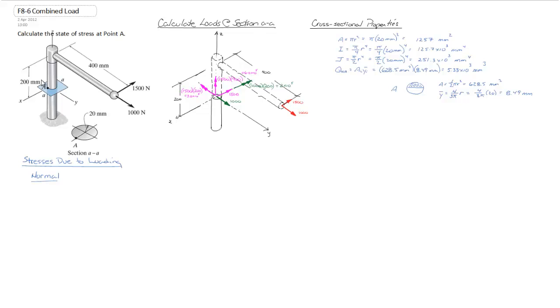So now that we've got the problem all laid out, the cross-sectional properties done, and all the various components of load calculated for the particular cross-section in question, now what we want to do is calculate the individual stress components at point A. Remember where point A is on the x-axis up on the cross-section AA.